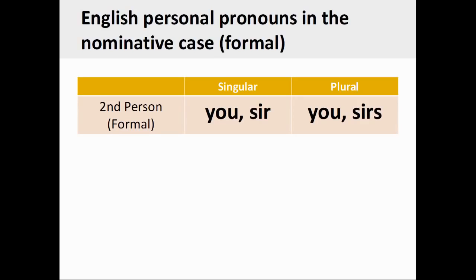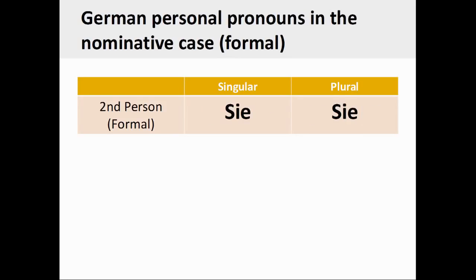English generally does not have a formal form of address, although it can be approximated by adding 'sir' or 'ma'am' to the second person singular and plural personal pronouns, as you see on the screen. It is important to note, however, that German has a formal form of address that uses specific personal pronouns. These are: Sie, second person singular formal, and Sie, second person plural formal. These formal personal pronouns are always capitalized.